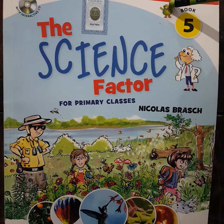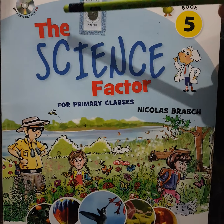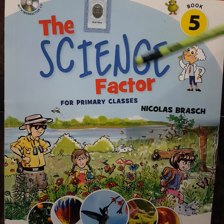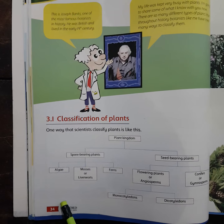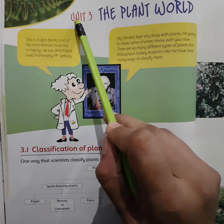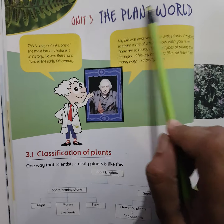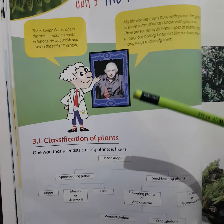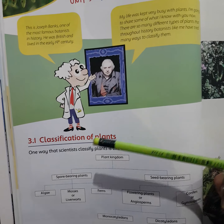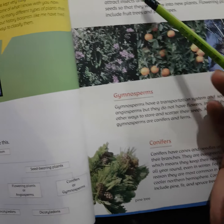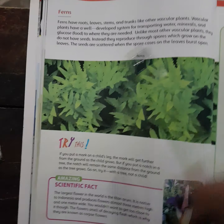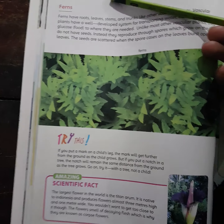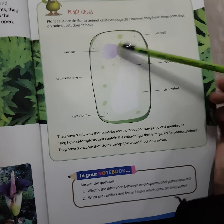Assalamu alaikum, Class 5 students. Open your book 'The Science Factor', page number 34. Unit 3: The Plant World. Classification of plants: angiosperms, gymnosperms, conifers, ferns, and plant cell.